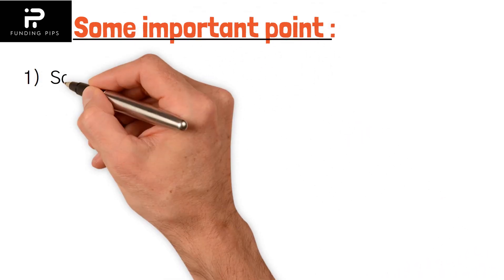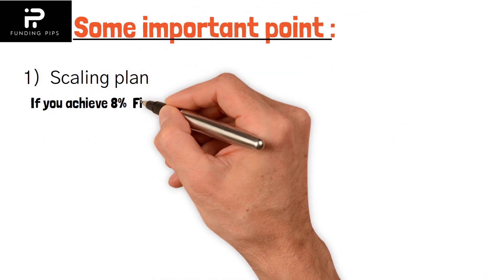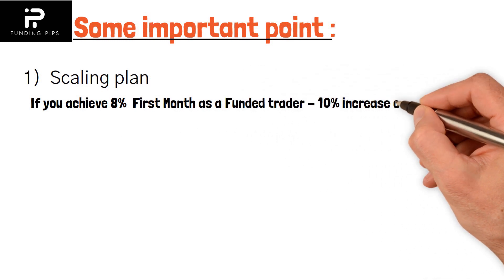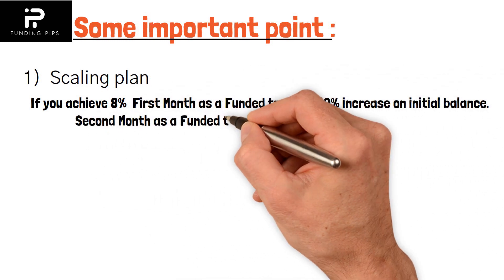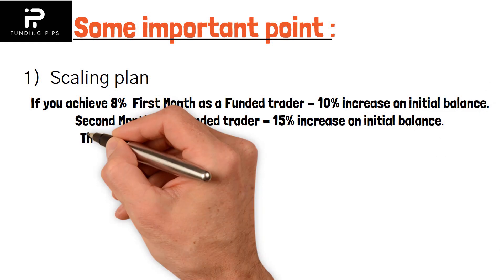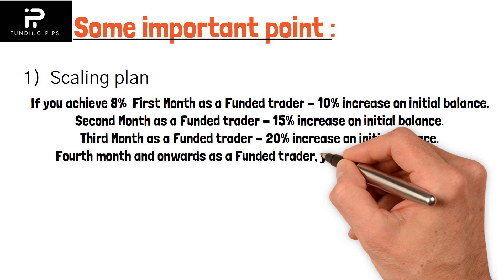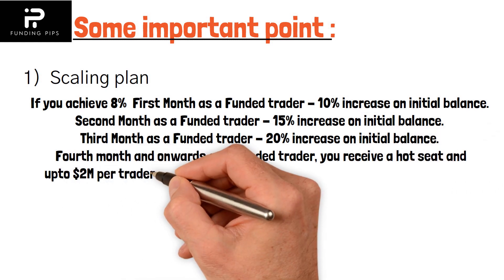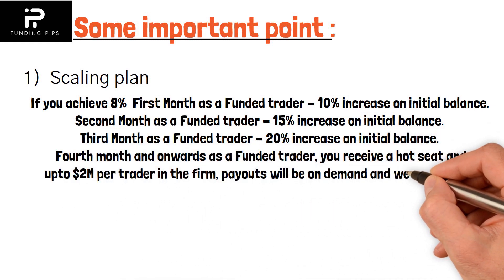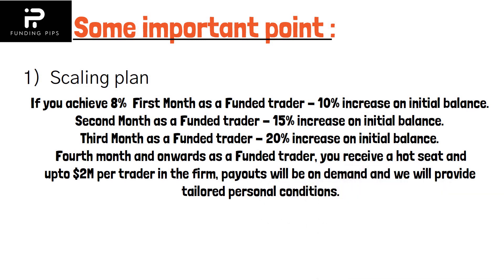Now let's look at some important points to remember. For the scaling plan, to scale up your account you must achieve at least 8% in a month. If you achieve that, in the first month they will increase your capital by 10%, in the second month by 15%, in the third month by 20% — provided you achieve the target each time. From the fourth month onward, if you continue to achieve the criteria, they will offer you a hot seat with funding of $2 million.